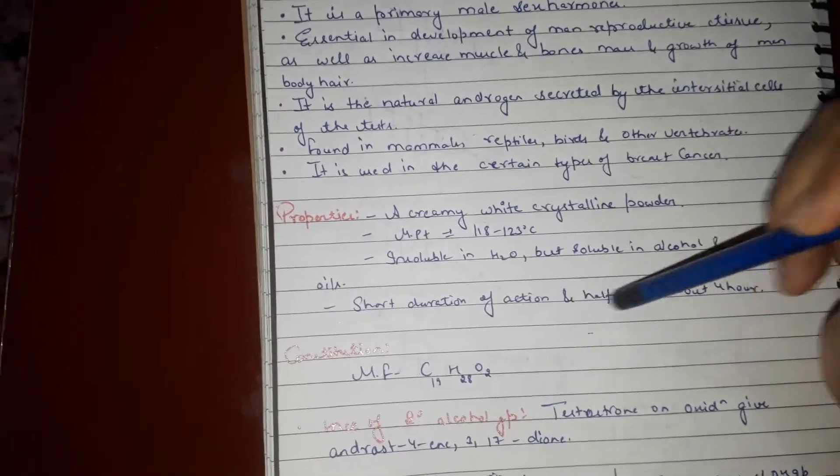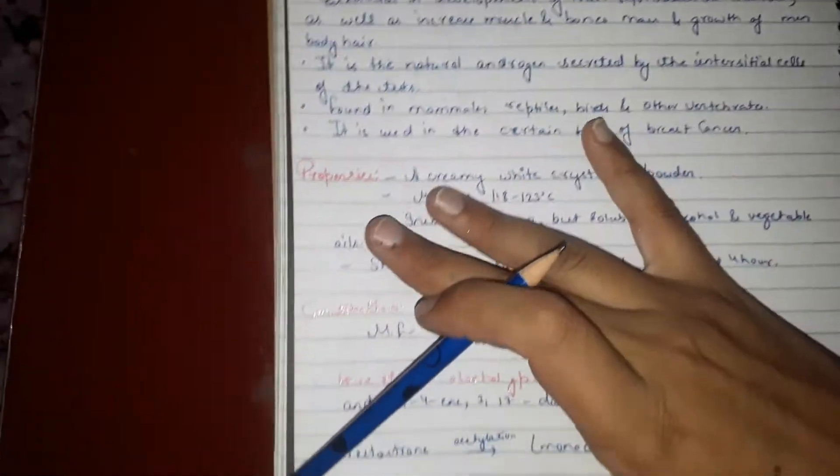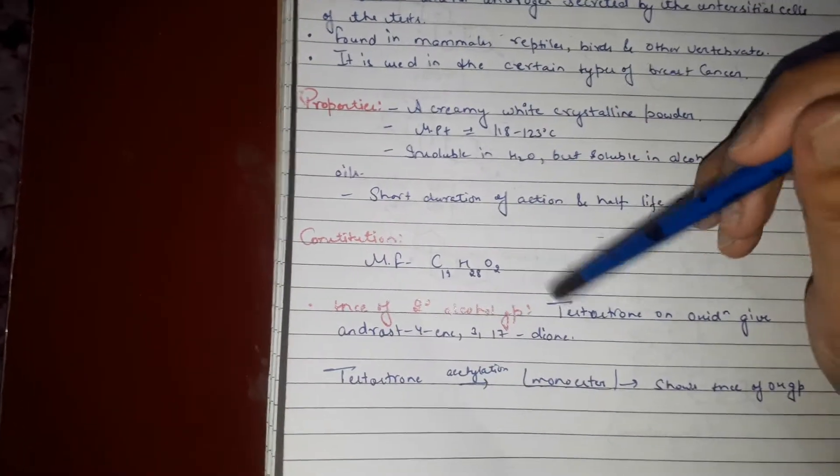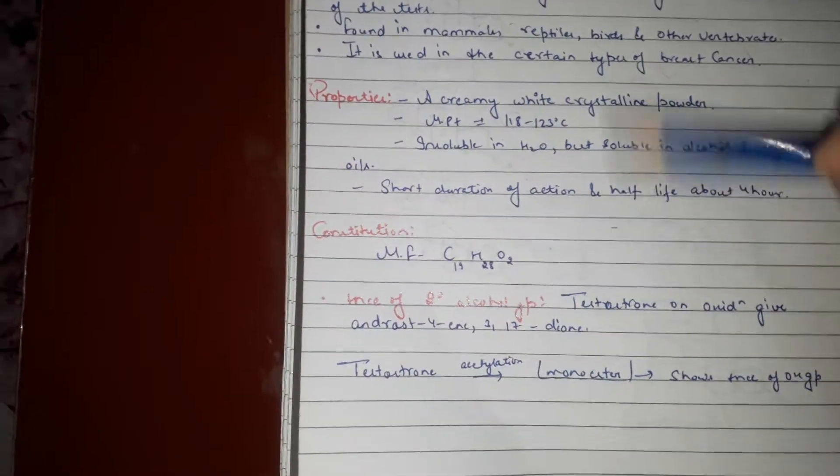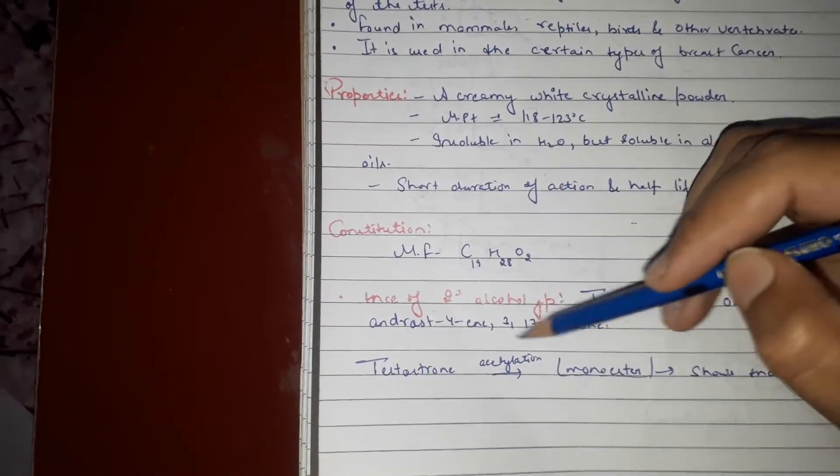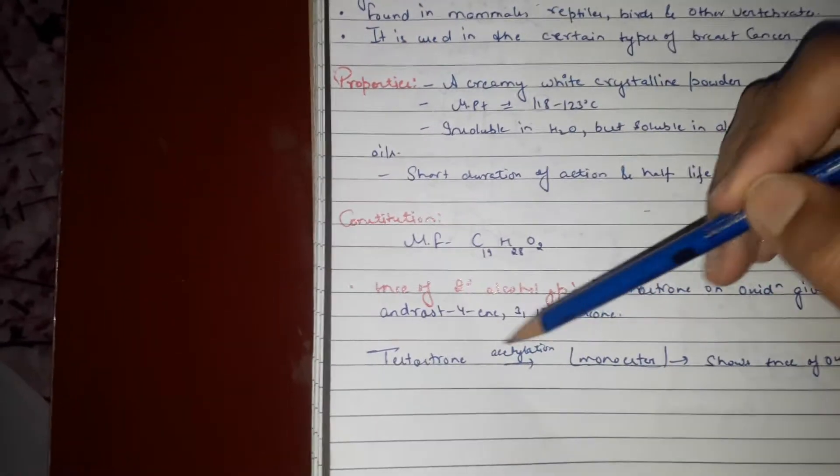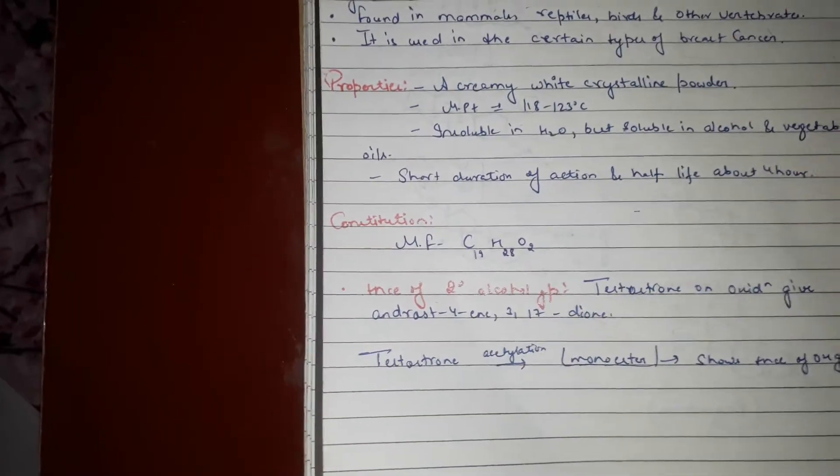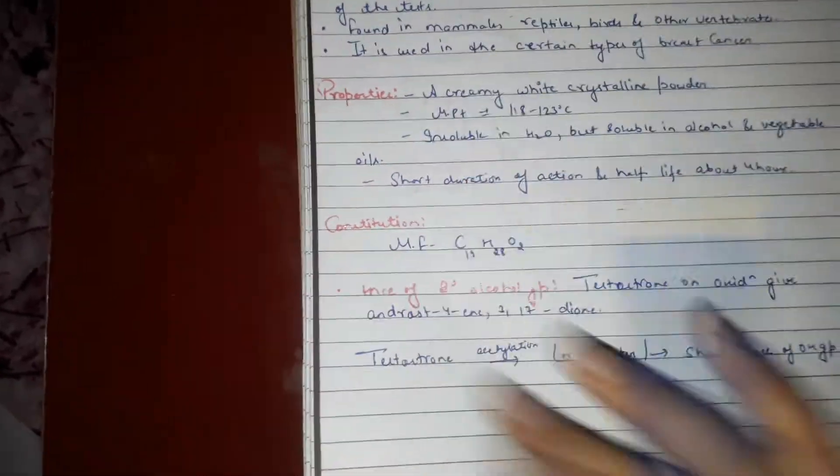Constitution: Presence of secondary alcohol. Testosterone oxidation gives androstenedione, androst-4-ene-3,17-dione. Testosterone acetylation to monoester shows presence of one OH group in structure.